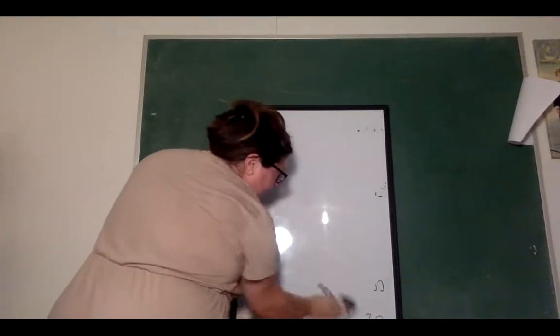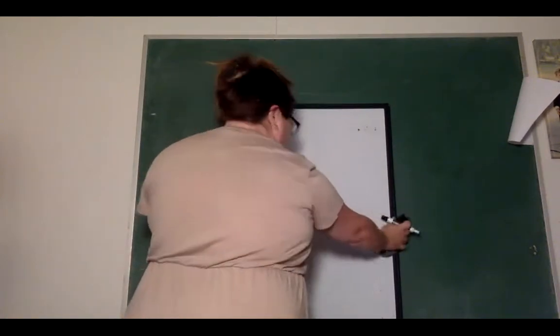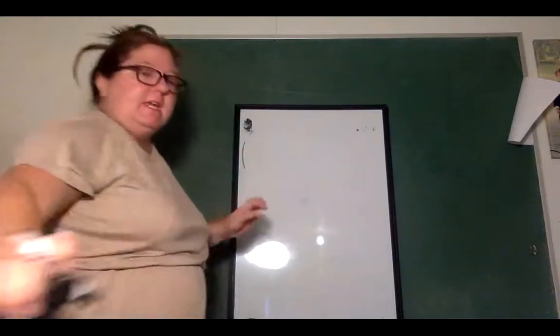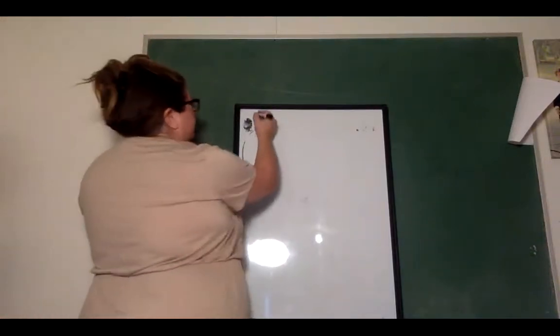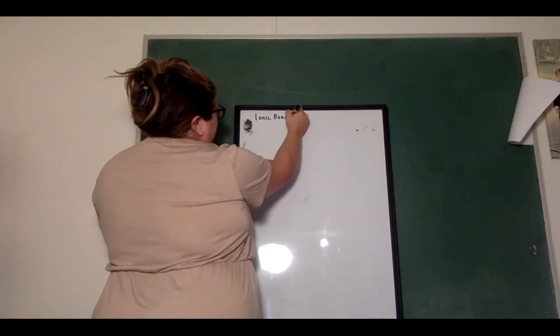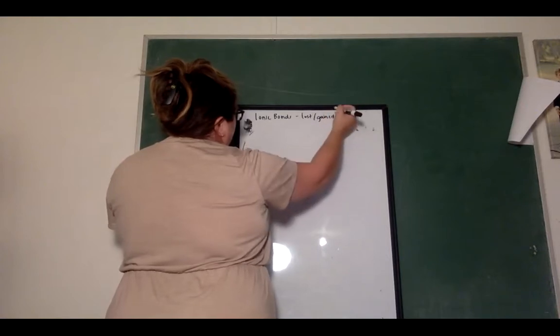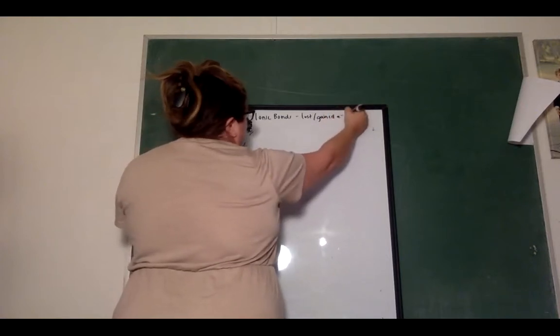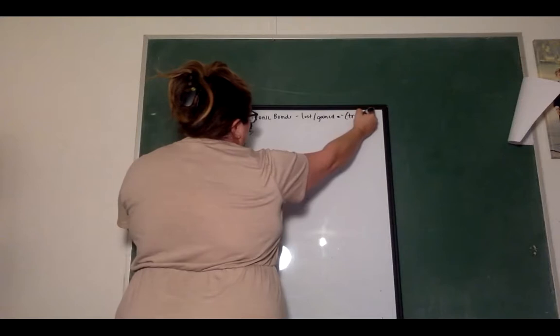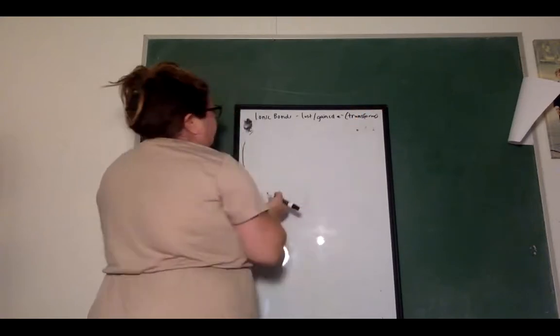Now let's look at the second type of bond that we're looking at. The second type of bond. So we just did ionic bonds, and that's when they lost, gained electrons. They have been transferred to form the bond.